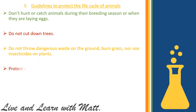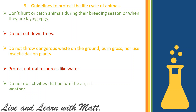Four: protect natural resources like water, because it is good for the living of animals. Five: do not do activities that pollute the air — examples include factory work and burning garbage — as these activities bring many changes to the weather. And that's how we take care of animals from extinction.